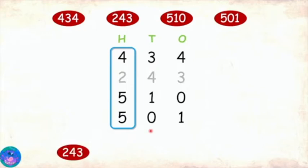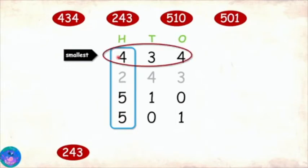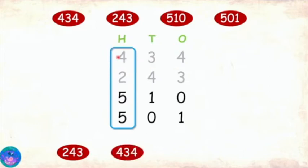I will write that down and then compare the remaining three numbers. Now checking the digits, four is the smallest. So this would mean 434 is the next smallest number. So let us write it down.